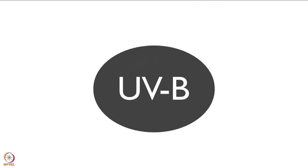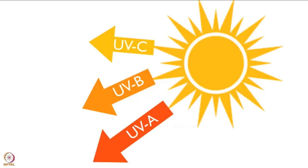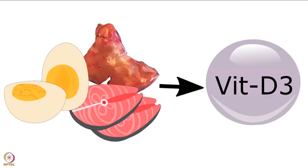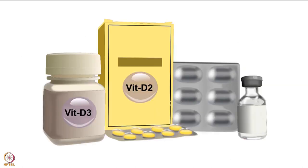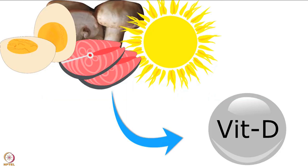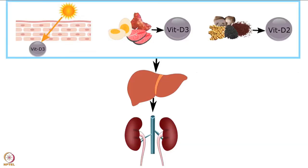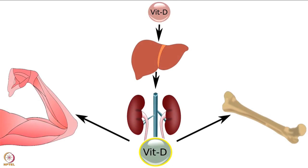UVB, known as ultraviolet B rays, is one of the three types of sun rays. Small amounts of D3 can also be obtained from non-vegetarian foods. Vitamin D2 is present in a few vegetarian foods. Supplements of both D2 and D3 are available. Importantly, vitamin D from all these sources is inactive — it must undergo activation first in the liver and then in the kidney, where the active form, calcitriol, is formed.